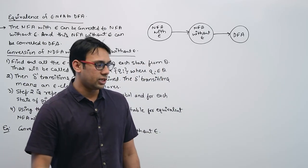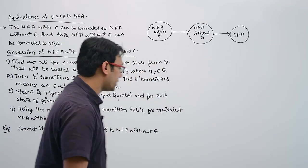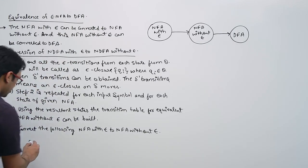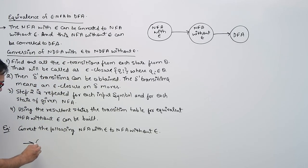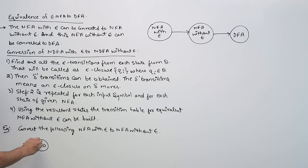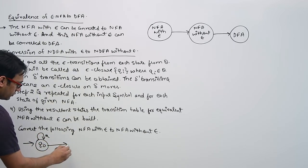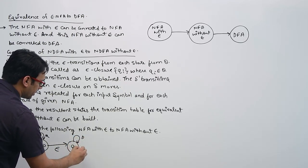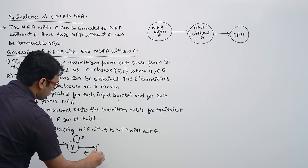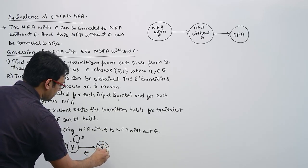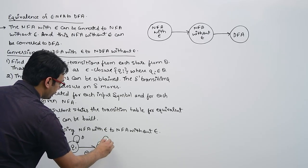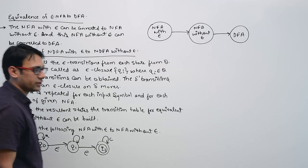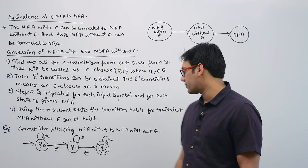Let me explain — I know it is very difficult to understand but let me explain. Assume we have the following Epsilon NFA. This is the state Q0. This is the transition on symbol A. This is an Epsilon move. This is the state Q1. This is the transition on B. This is an Epsilon move. Then this is the state Q2. This is the transition on C. So we have symbols A, B and C.